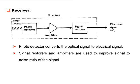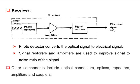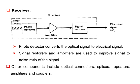Amplifier and signal restorer circuits restore signal fidelity and improve signal-to-noise ratio. In addition, there are several more components required for the optical communication system, which include optical connectors, splices, repeaters, amplifiers, and couplers.